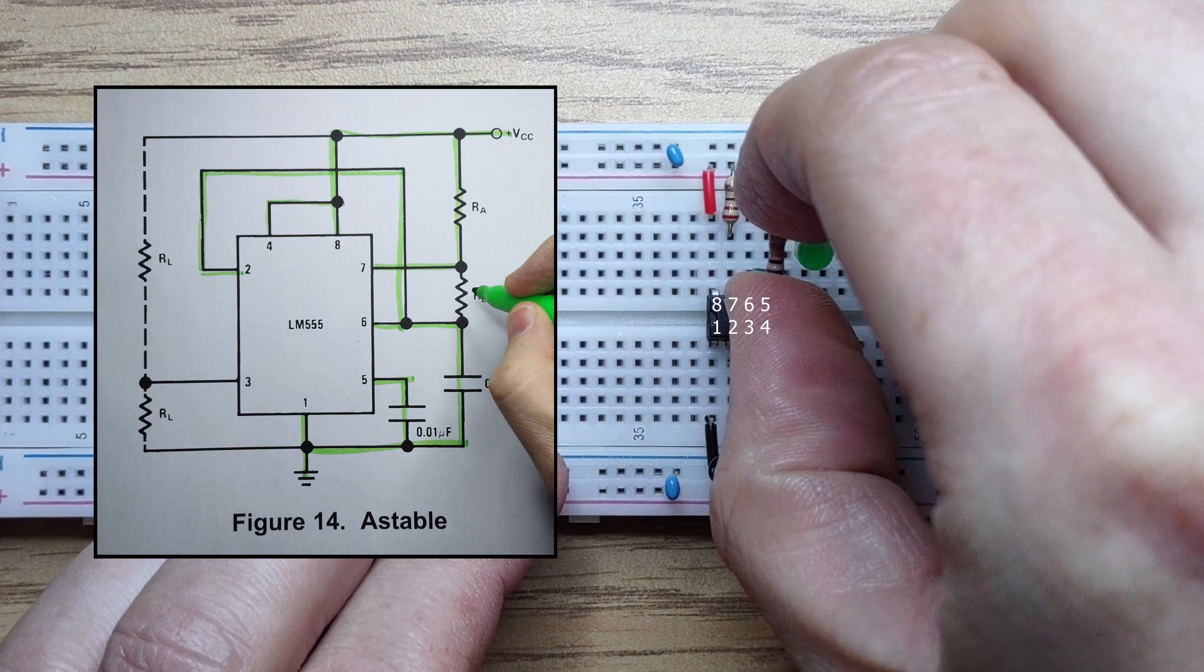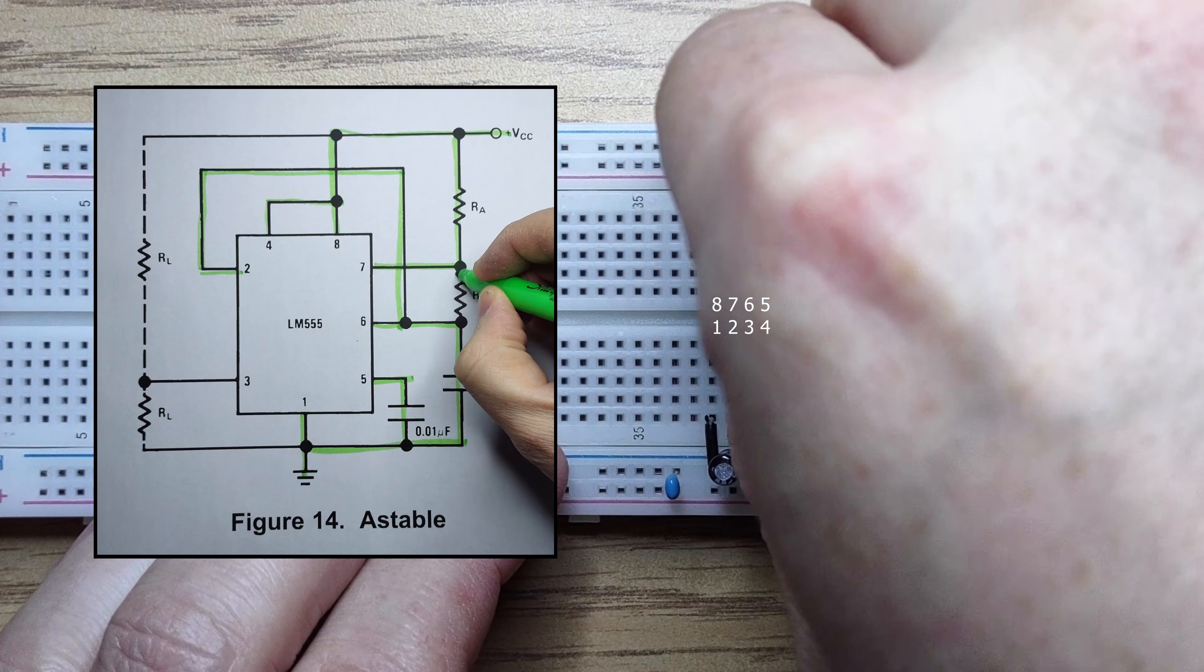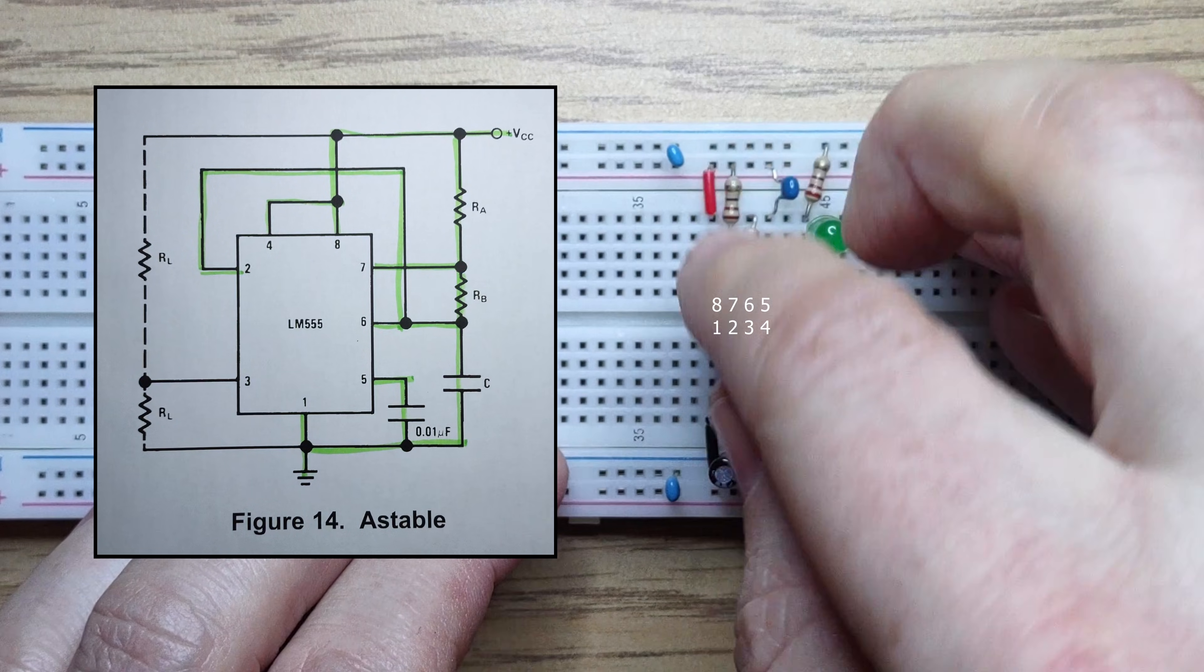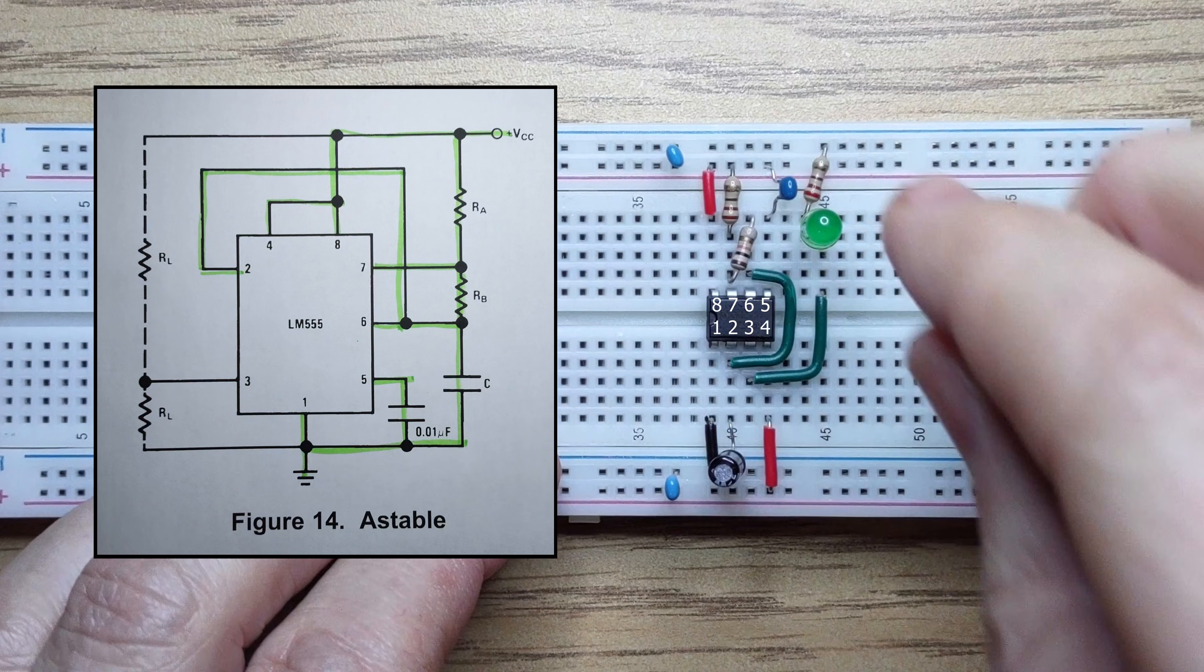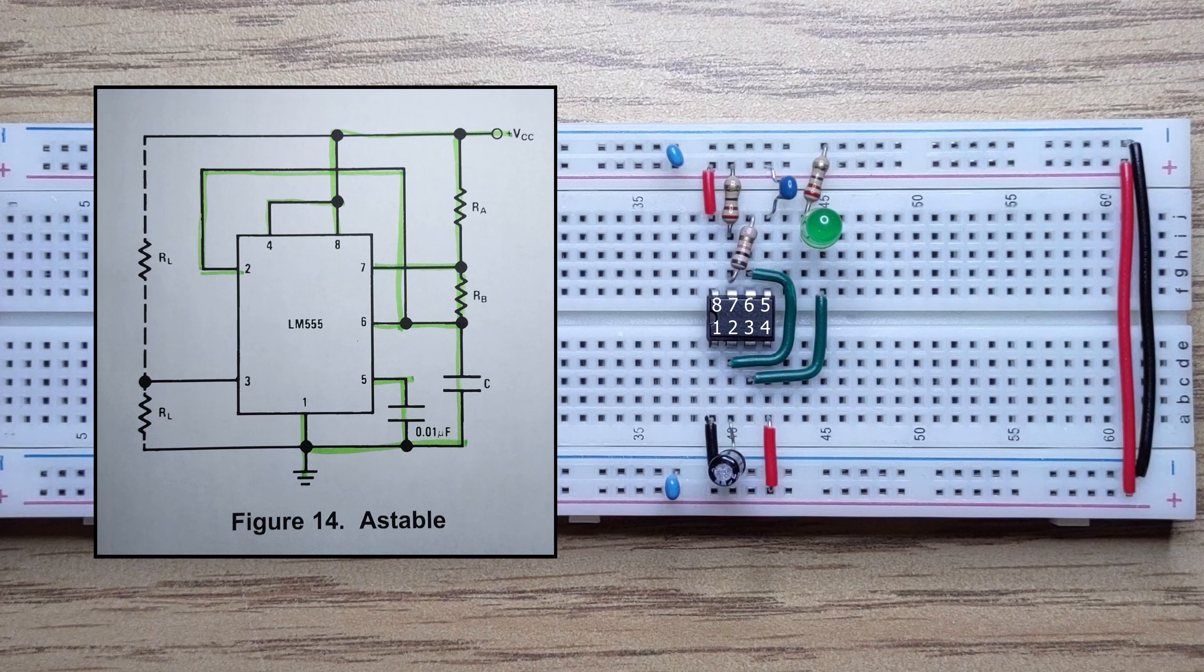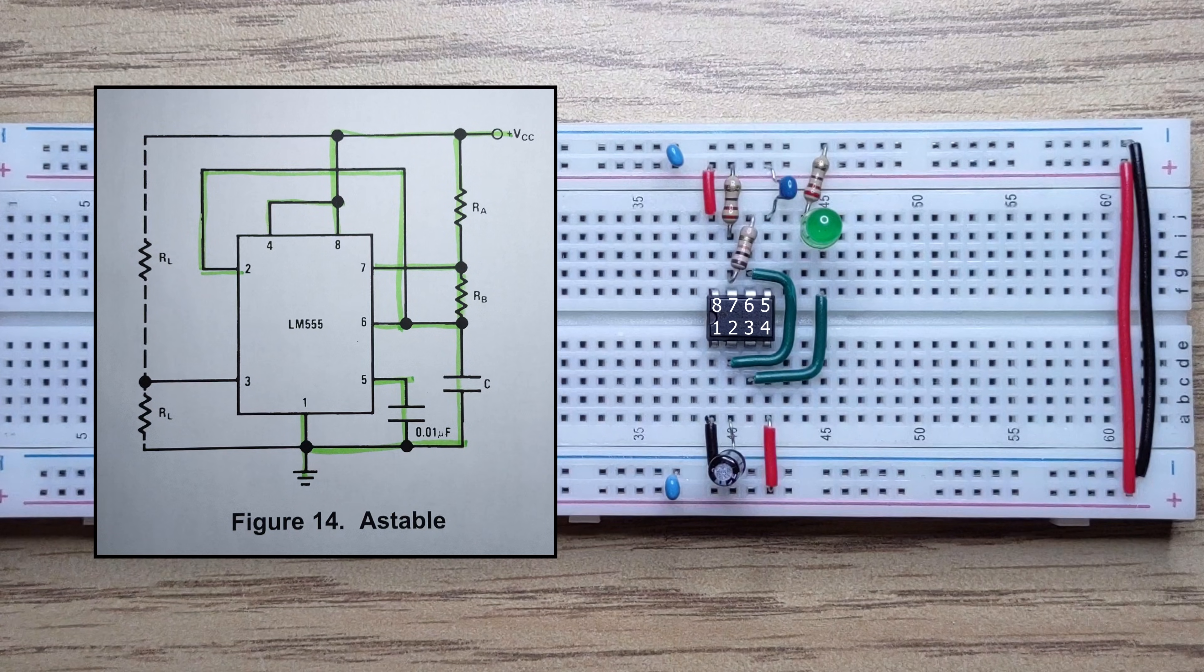We'll add a 10k resistor between pin 6 and 7. Our main capacitor is charged and discharged through this resistor, so choosing a large value here will make sure that the output toggles on and off slowly enough that we can see it.